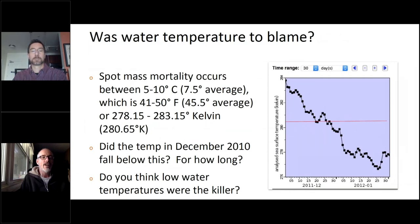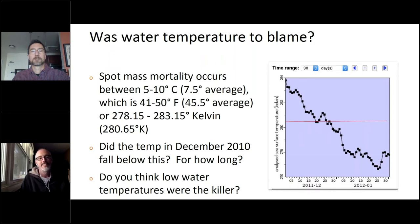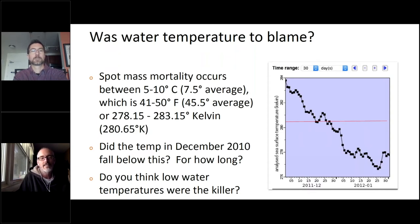That fast temperature decline — is that to blame? A bit more detail on spot: there is a lot of mortality that occurs in spot between the temperature of 5 and 10 degrees Celsius, or 7.5 degrees average. You can see what that is in Kelvin because the satellite data is reported in Kelvin as well. The red line on the graph shows roughly where 7.5 degrees is. In December, in the early part of the month, temperatures dropped and they dropped quickly.